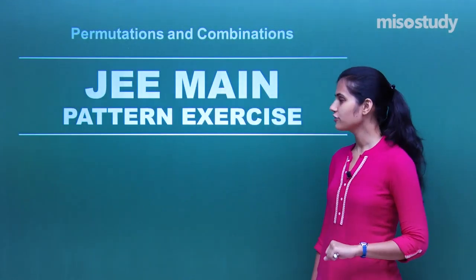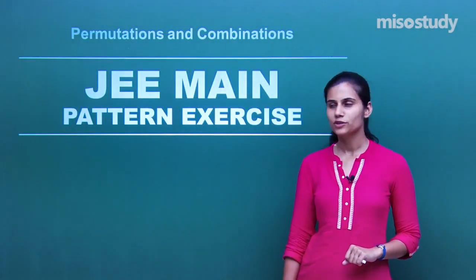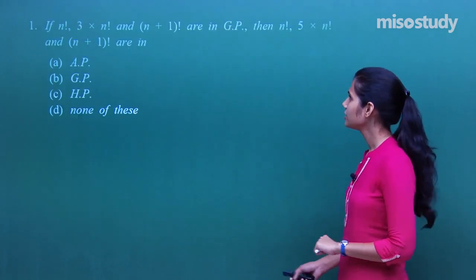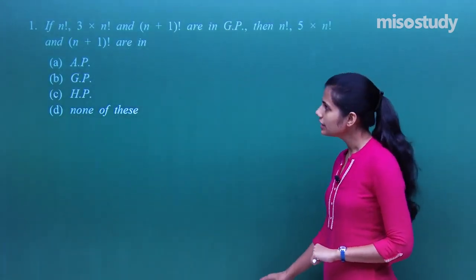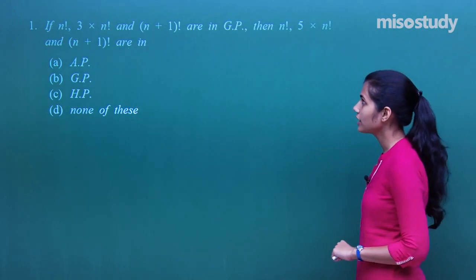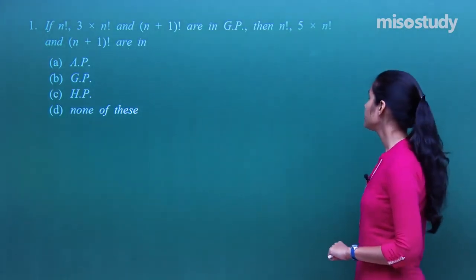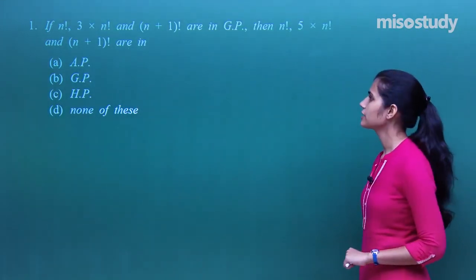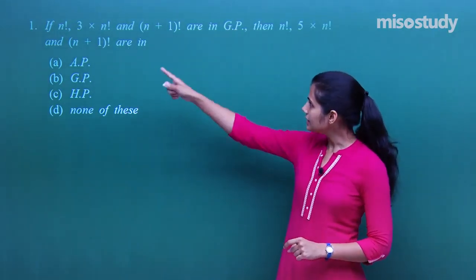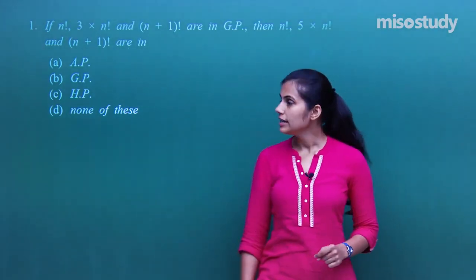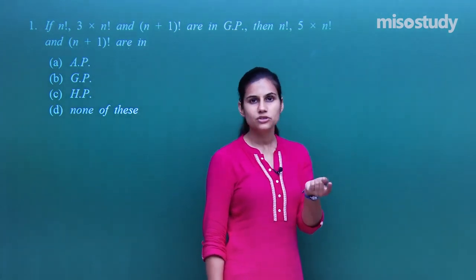Let's begin our discussion over the JEE Main pattern exercises for permutations and combinations. The first question says that if n factorial, 3·n factorial, and (n+1) factorial are in GP, then what is the status of n factorial, 5·n factorial, and (n+1) factorial? Since these three terms are in GP, the square of the middle term is equal to the product of the extremes.